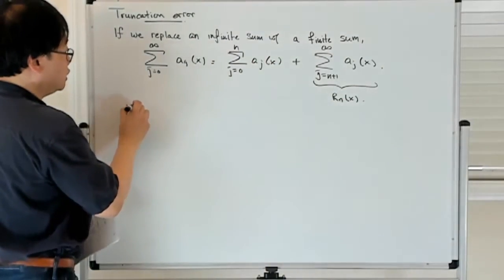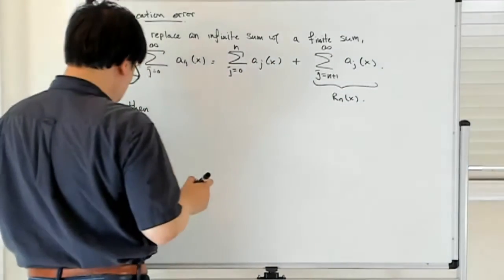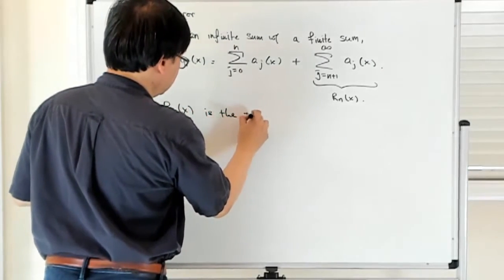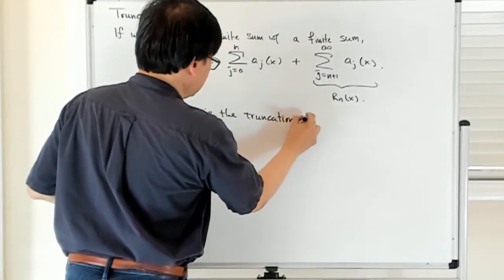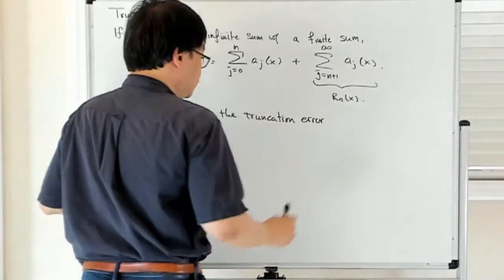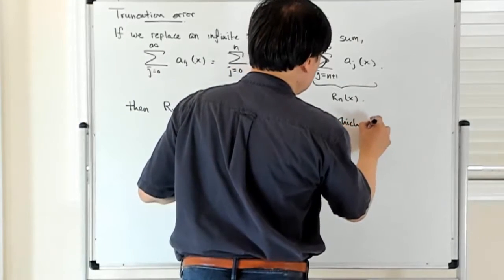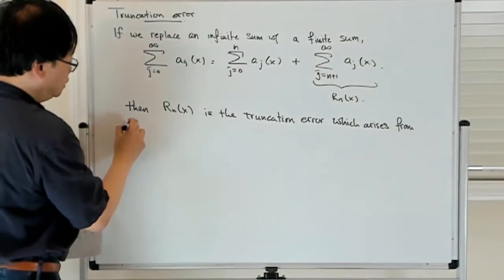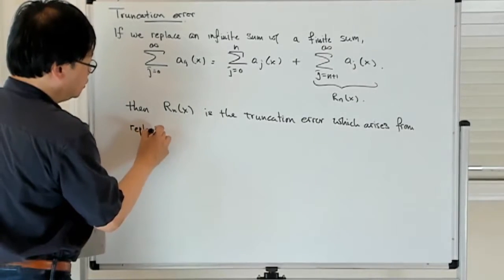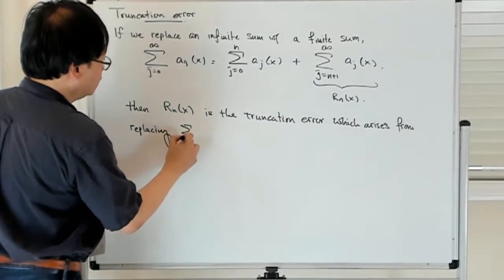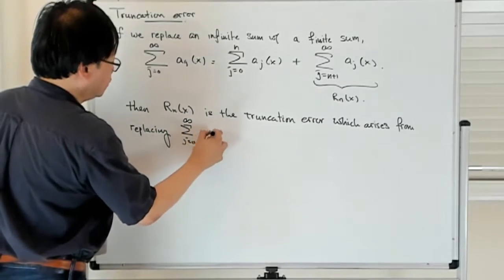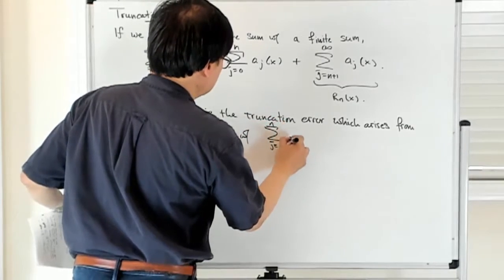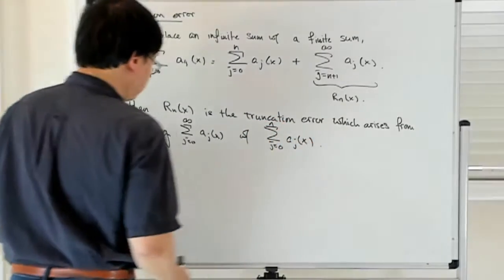So then rn of x is the truncation error which arises from replacing this infinite sum with a finite sum.